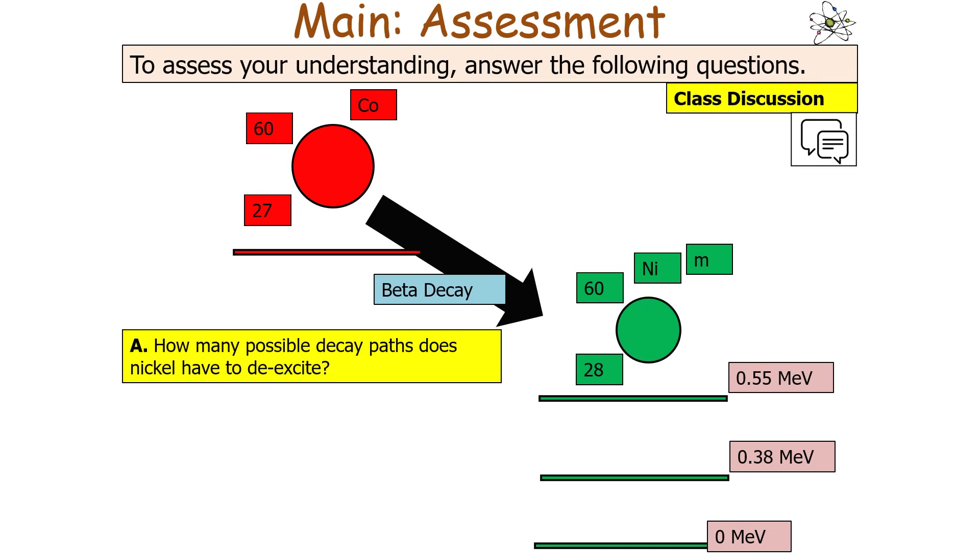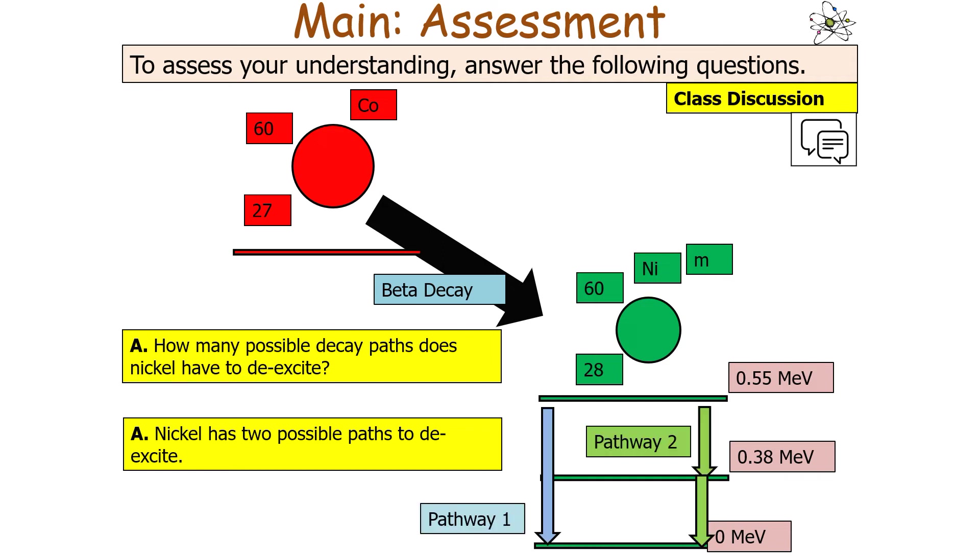The next question asks how many possible decay paths does nickel have to de-excite? The answer would be nickel has two possible paths. It can either, in pathway 1, go straight from 0.55 MeV down to 0 MeV from your excited state to your ground state. Or via pathway 2, it could do that in two steps: from 0.55 MeV to 0.38 and then from 0.38 MeV to 0 MeV.